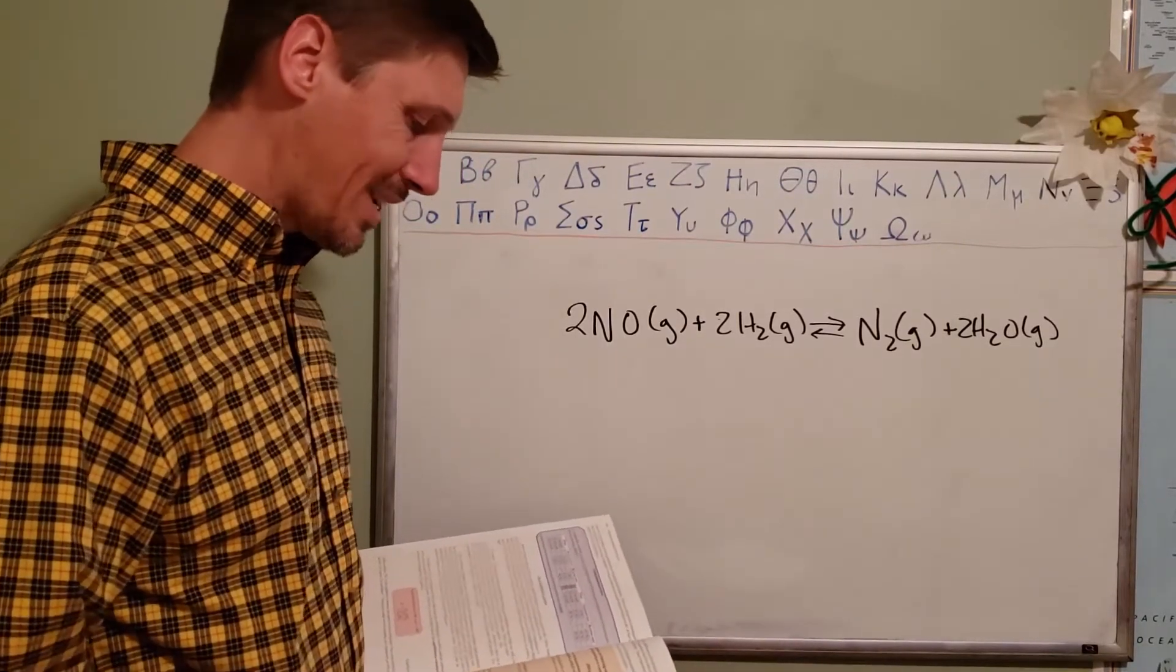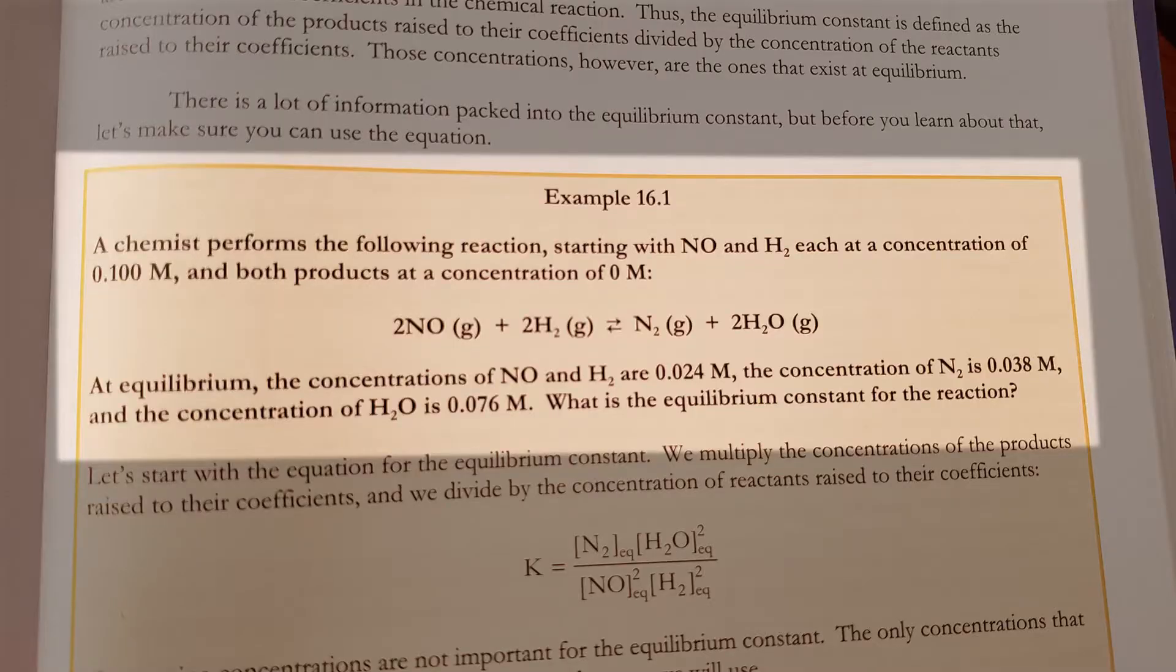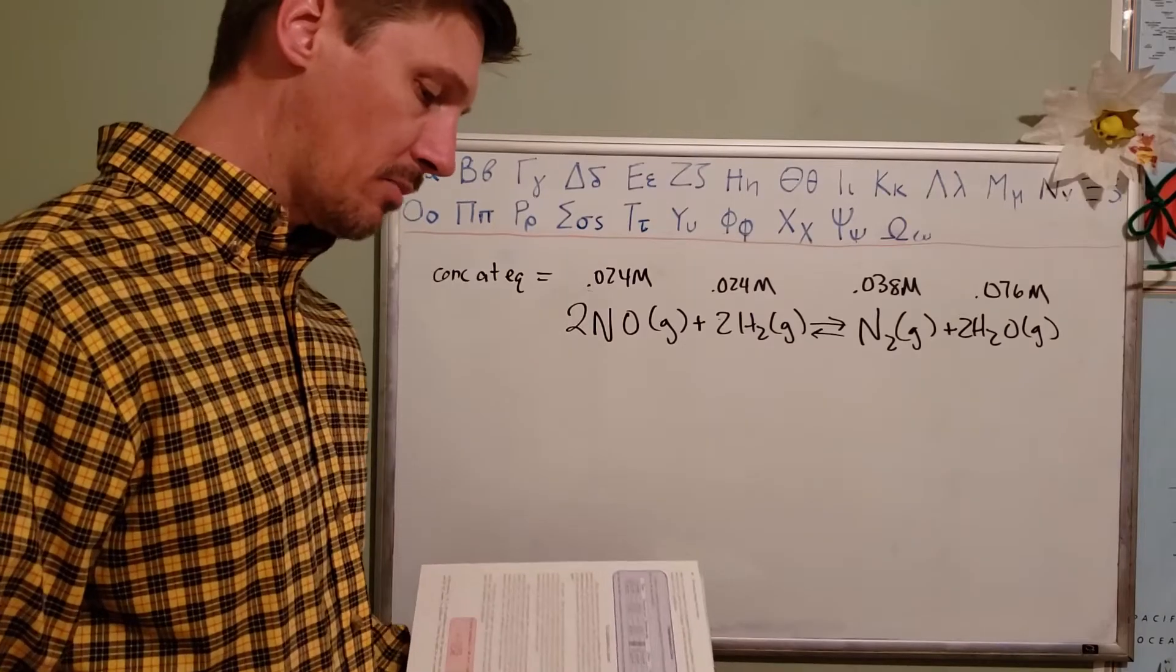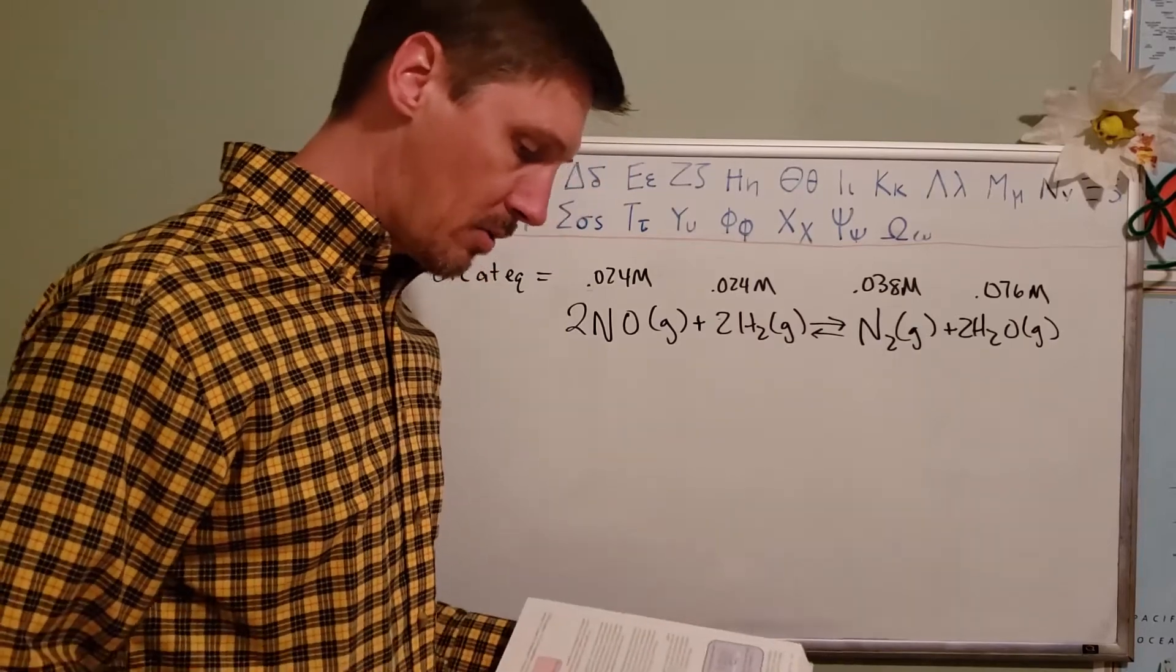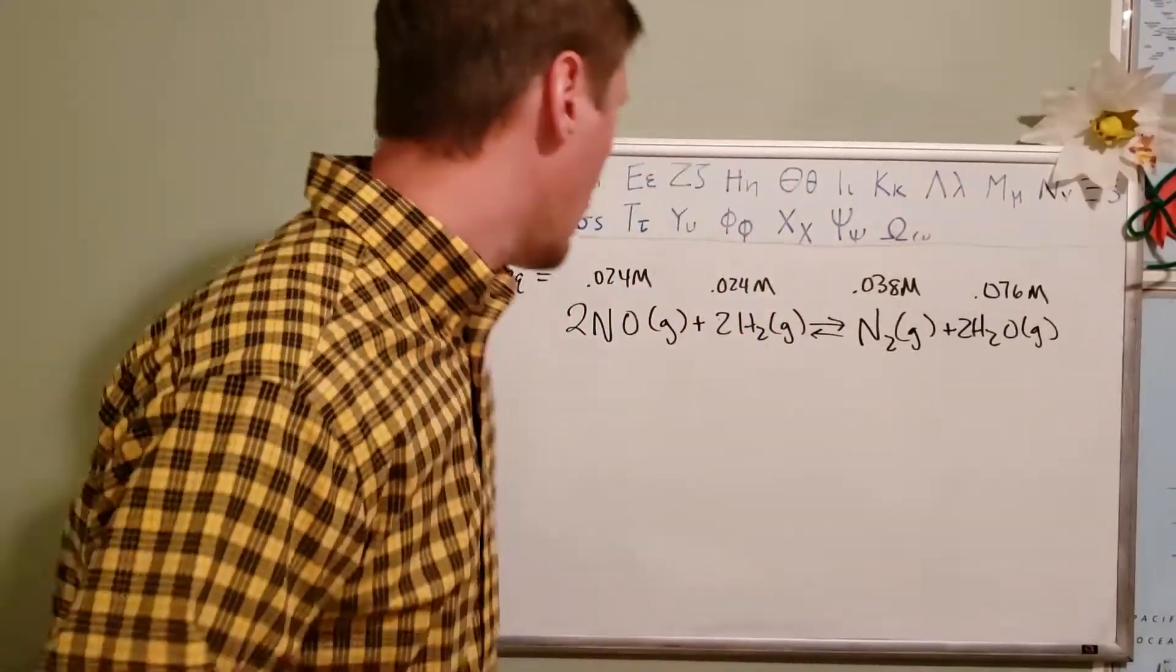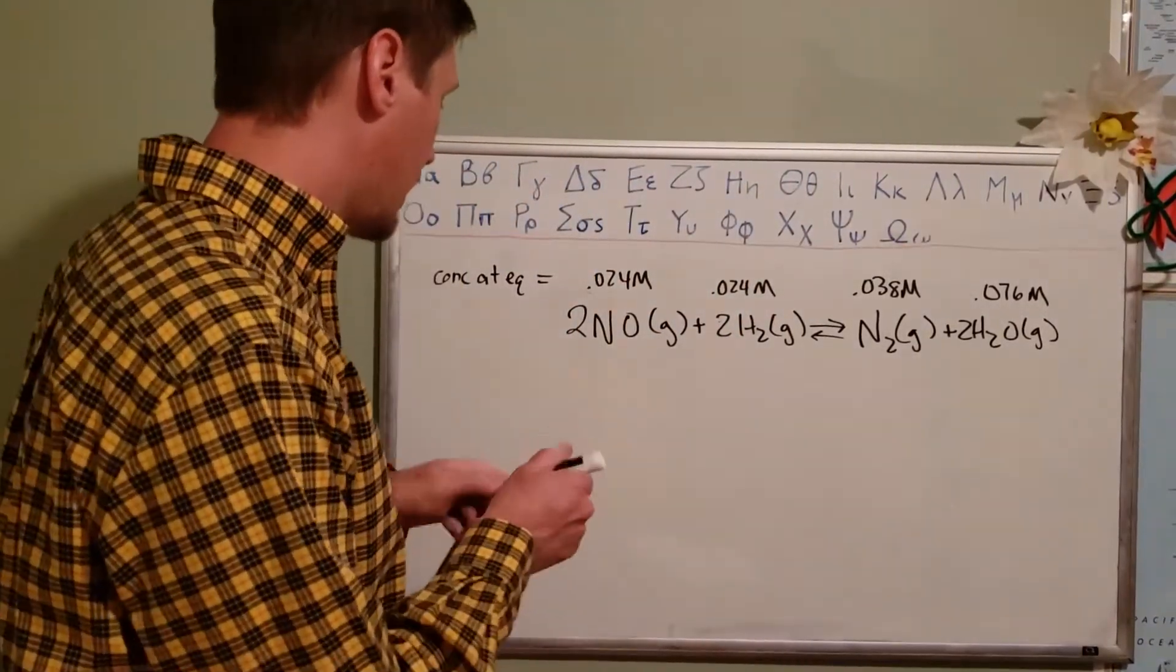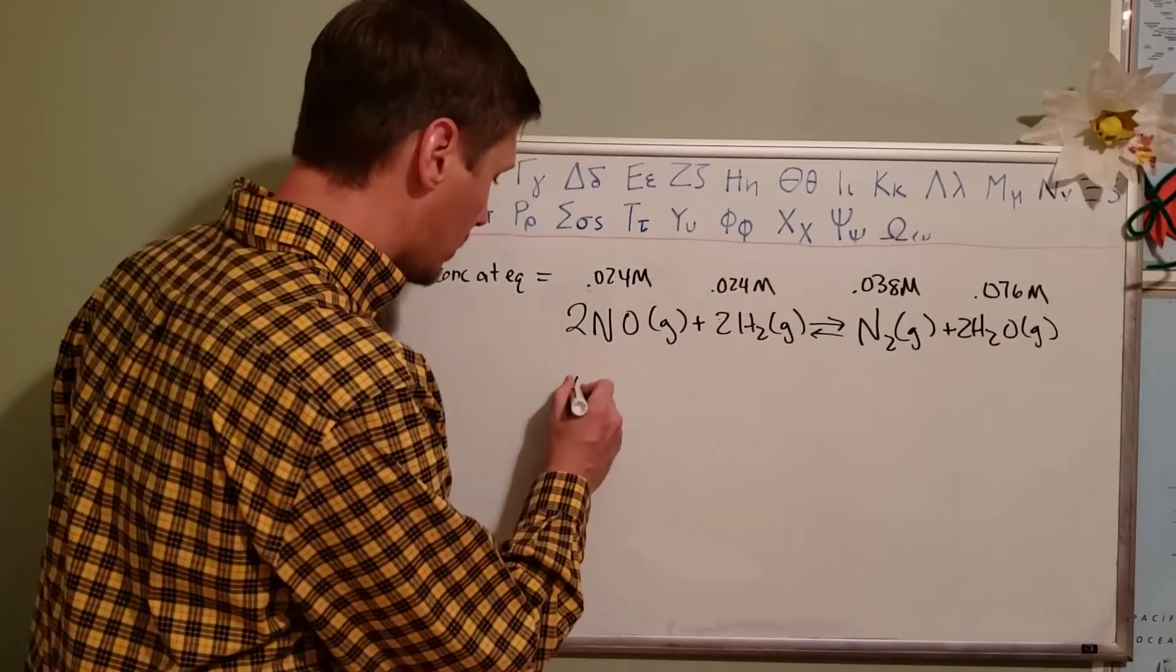Both products at a concentration of zero molarity. We're given this equation: 2NO + 2H2 yields N2 + 2H2O. At equilibrium the concentrations of NO and H2 are both 0.024 molarity, concentration of N2 is 0.038 molarity, and the concentration of H2O is 0.076 molarity. What is the equilibrium constant for the reaction?